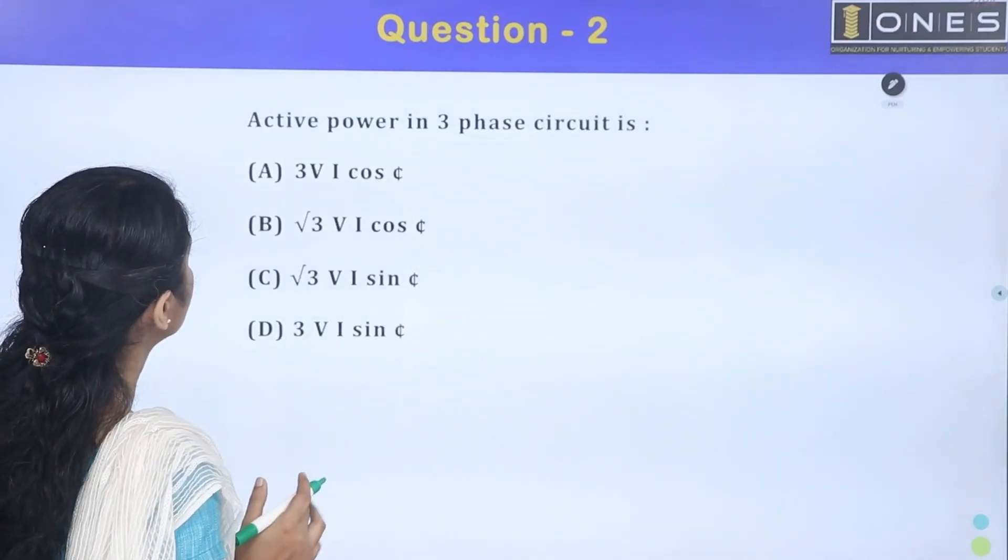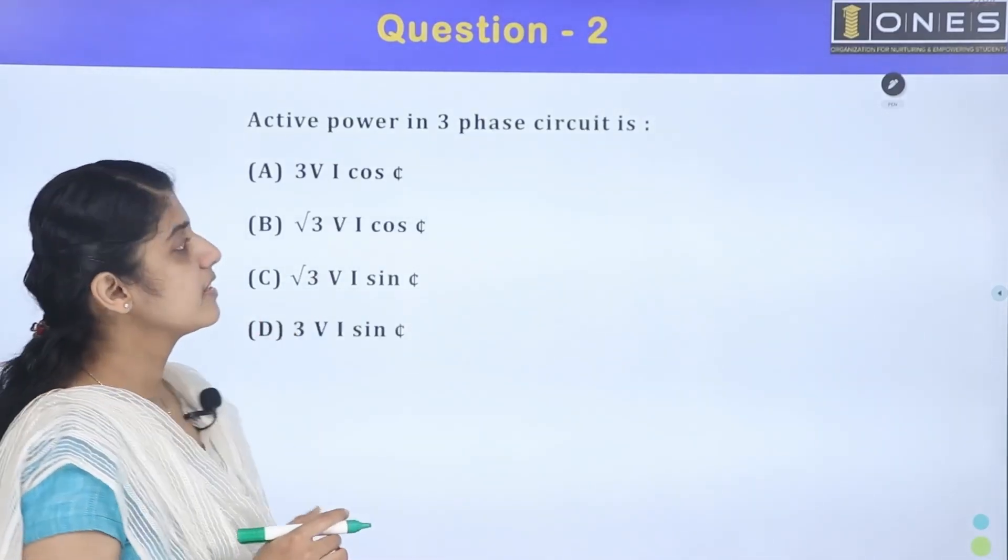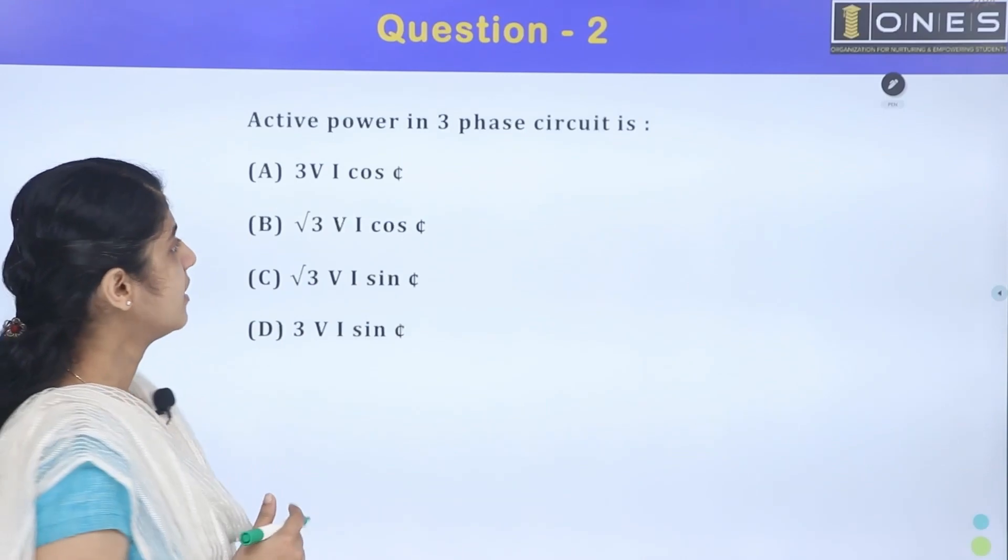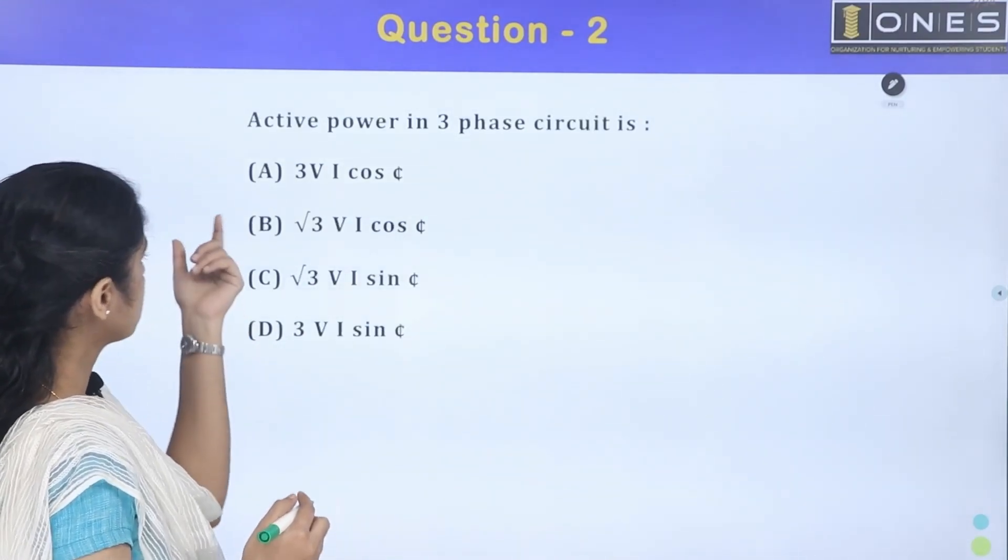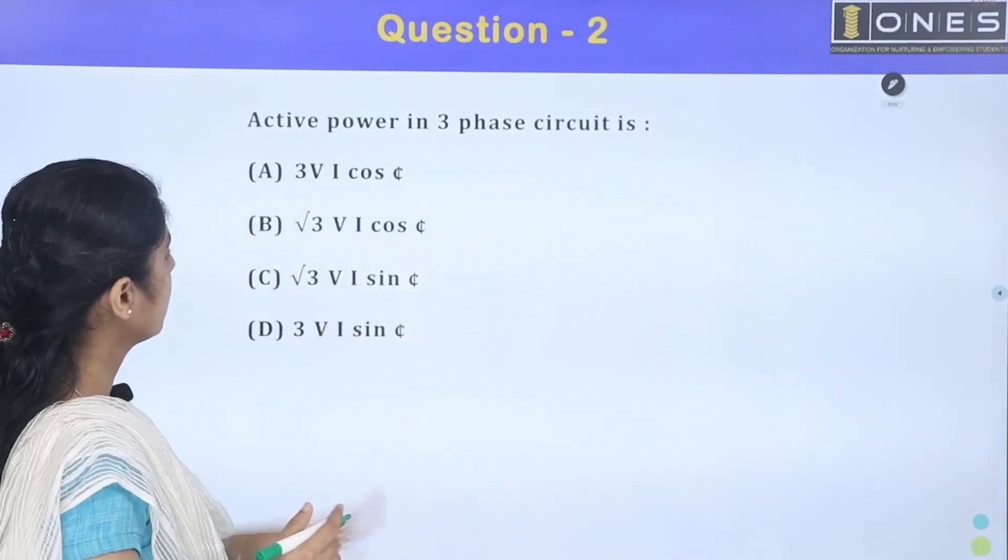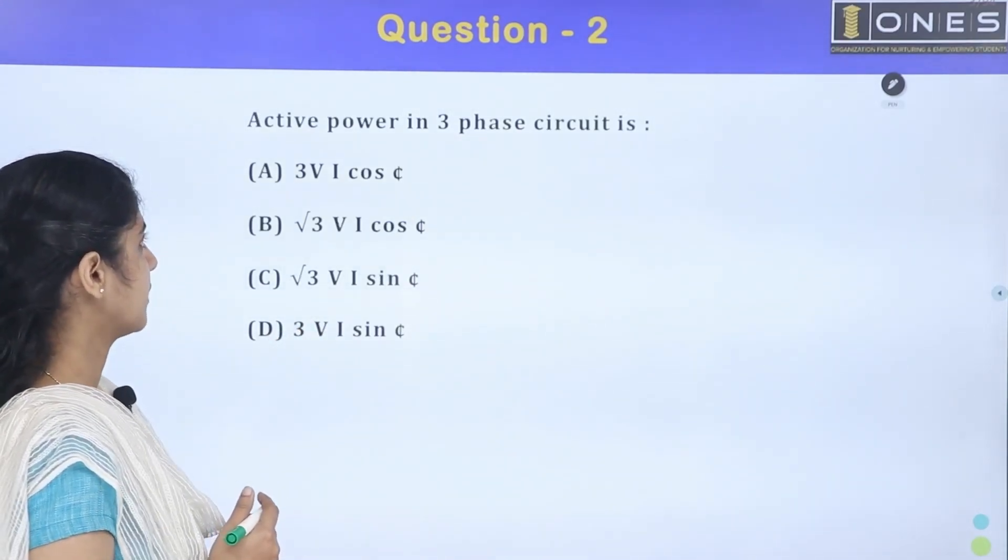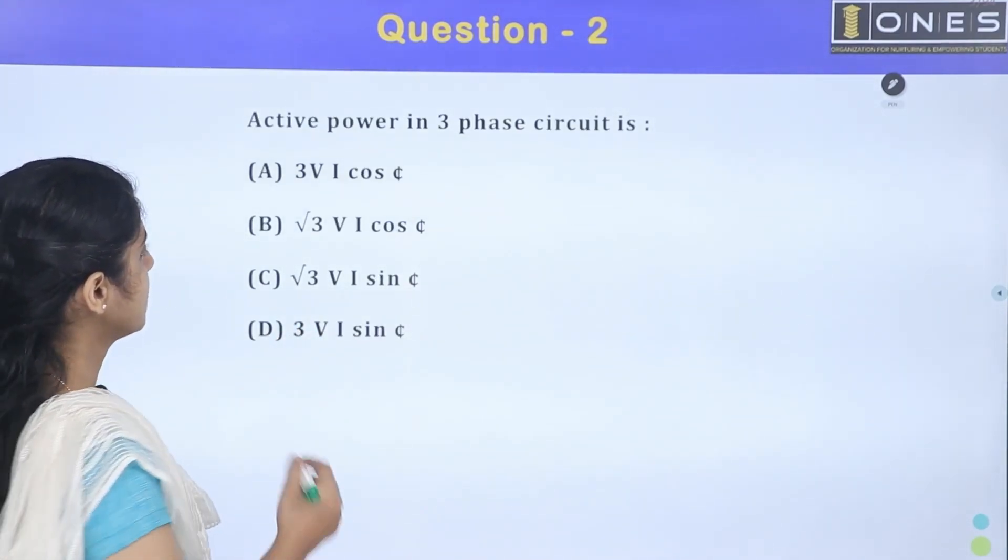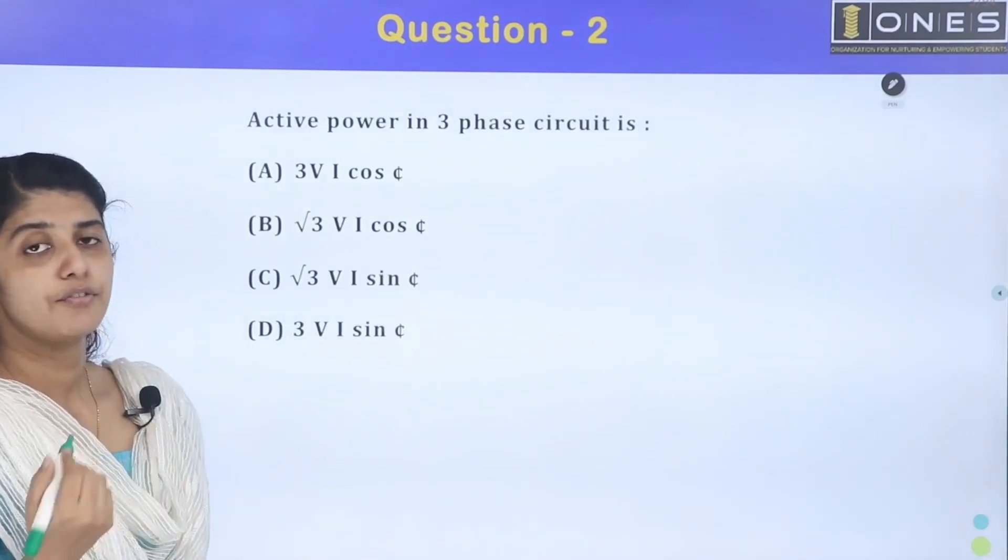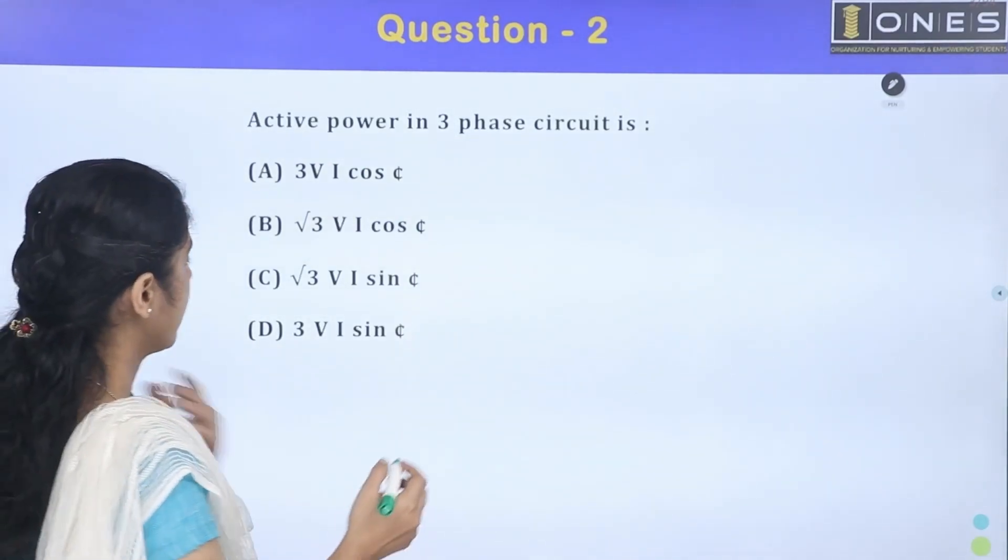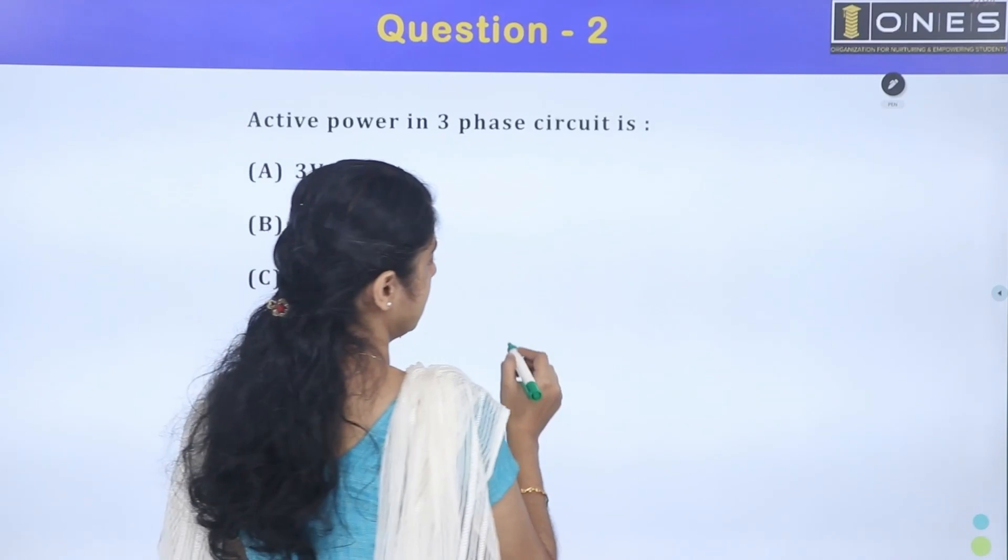Question number 2: Active power in 3 phase circuit. Options are 3 Vi cos phi, root 3 Vi cos phi, root 3 Vi sin phi, 3 Vi sin phi. The line value and phase value are used in line value. For active power, we need 3 types of power.